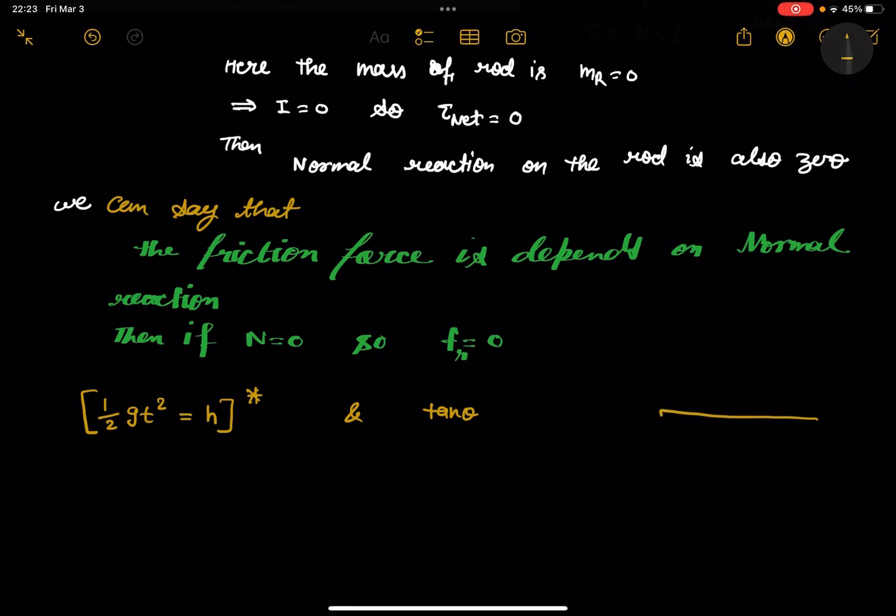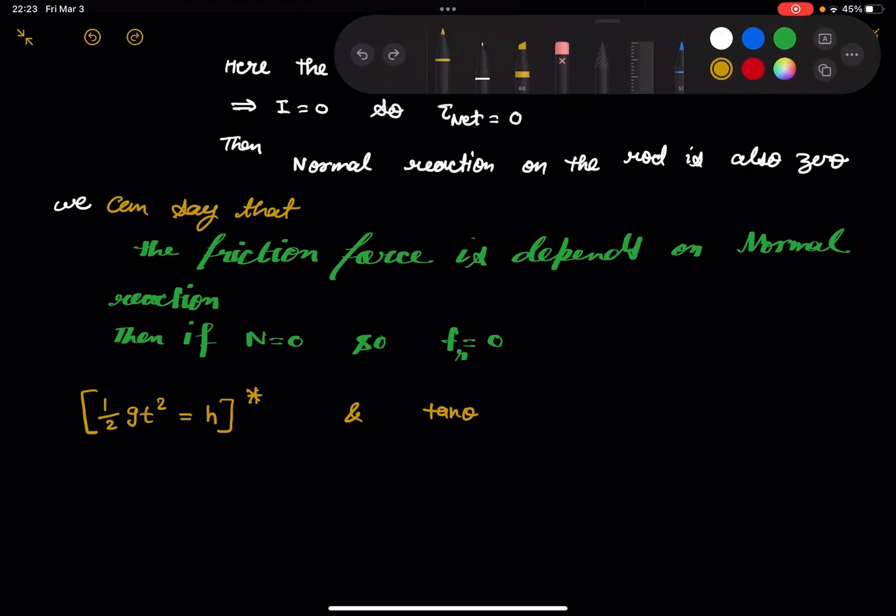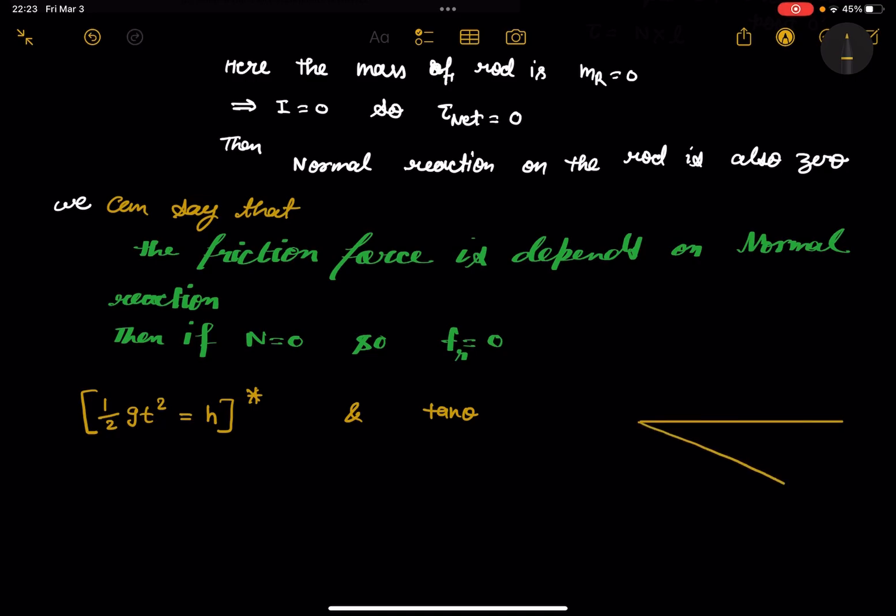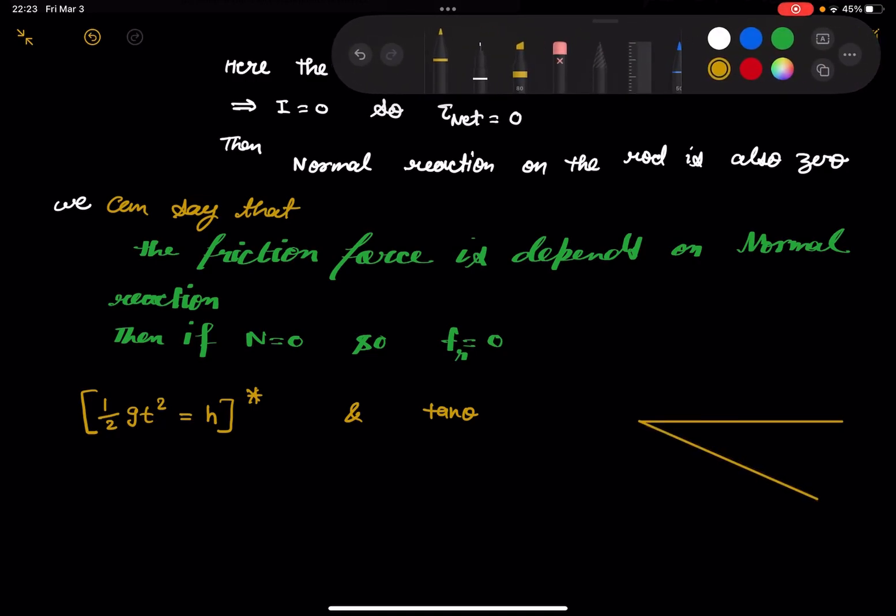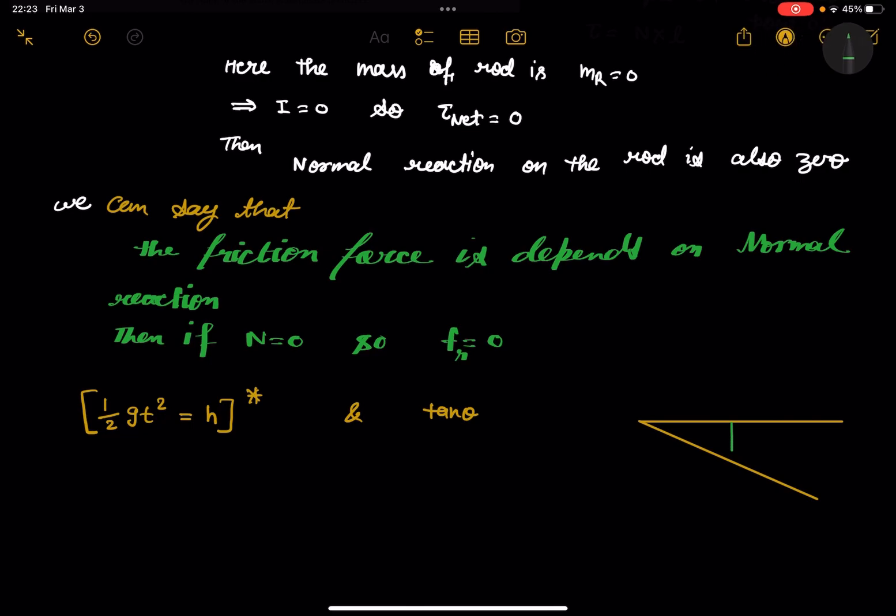Now from this triangle, my dear friend, just look at this triangle and you will understand clearly. So this is your H, which is half of Gt square, and this is L and this angle is theta. There is a bead location. So tan theta is equal to H by L, so tan theta is equal to half of Gt square upon L.